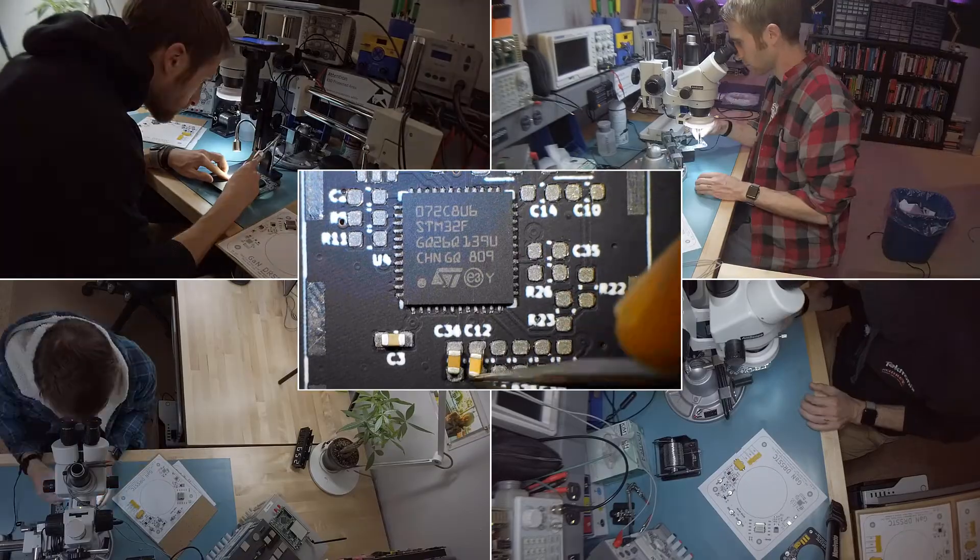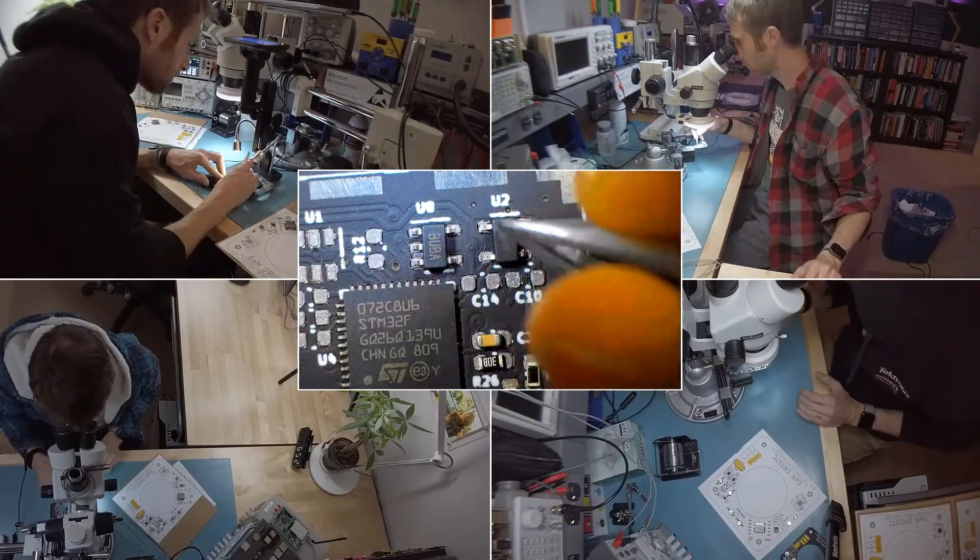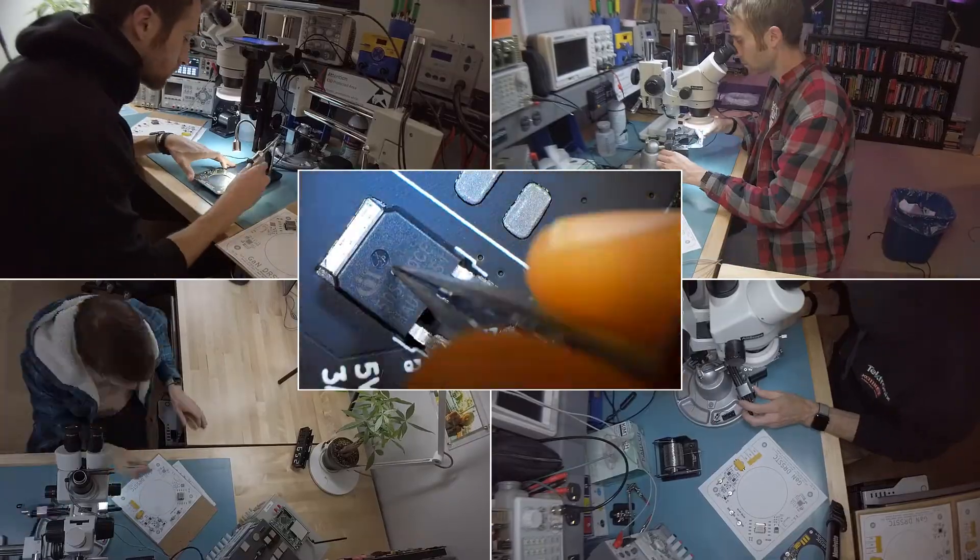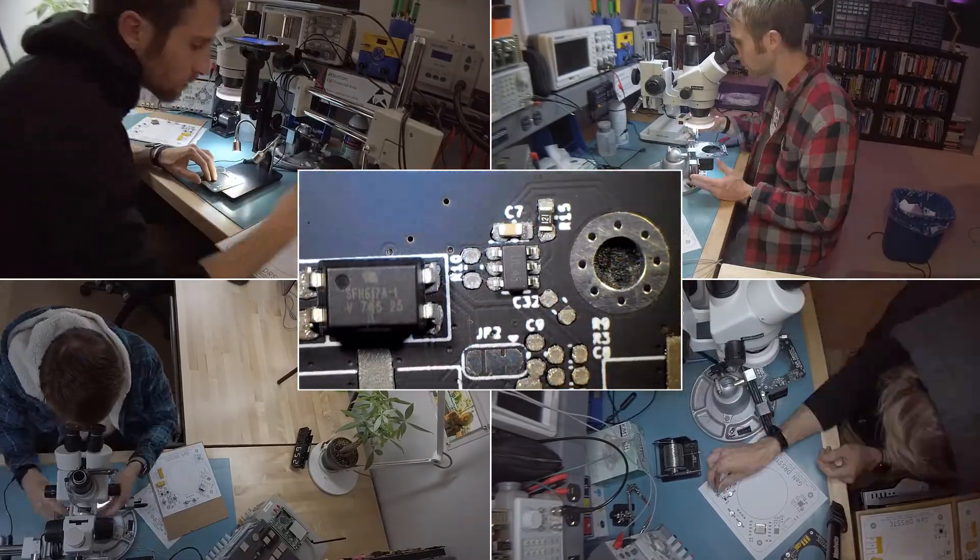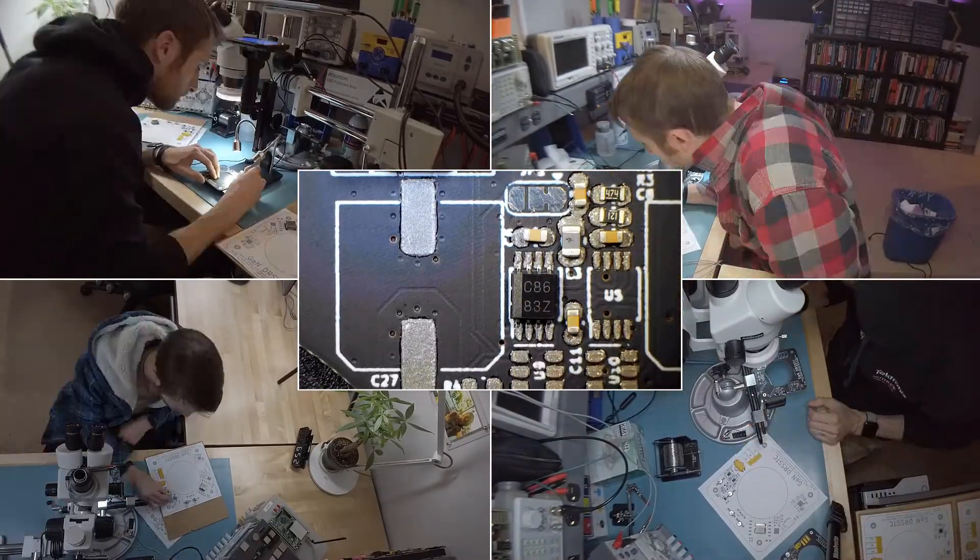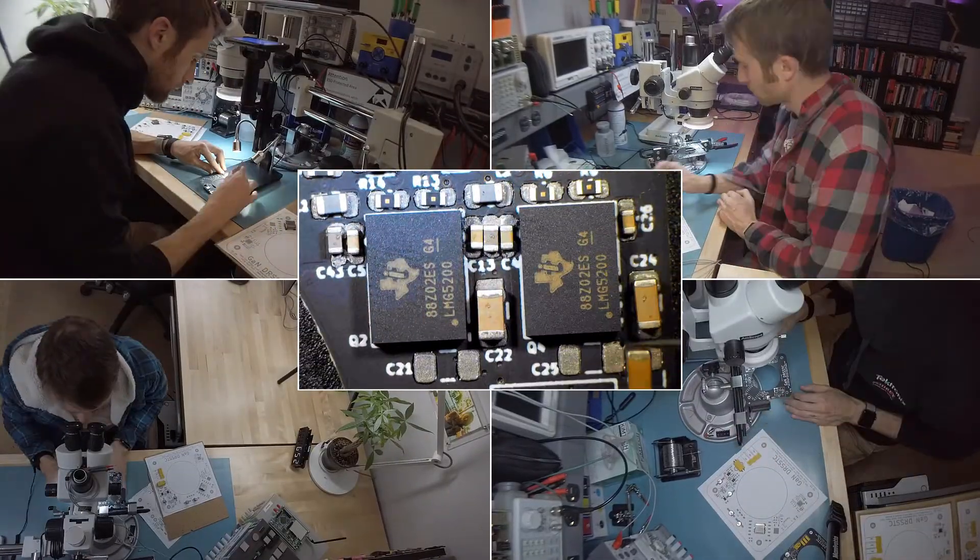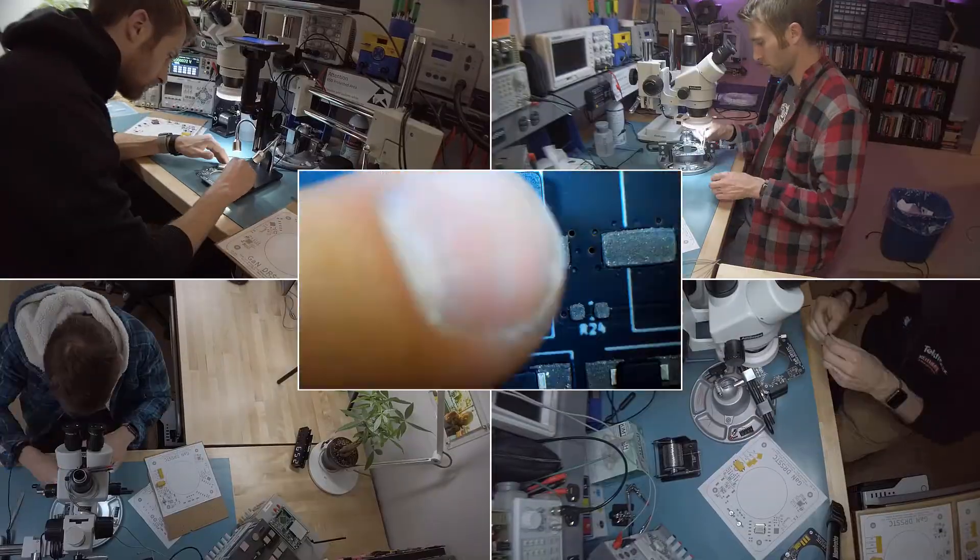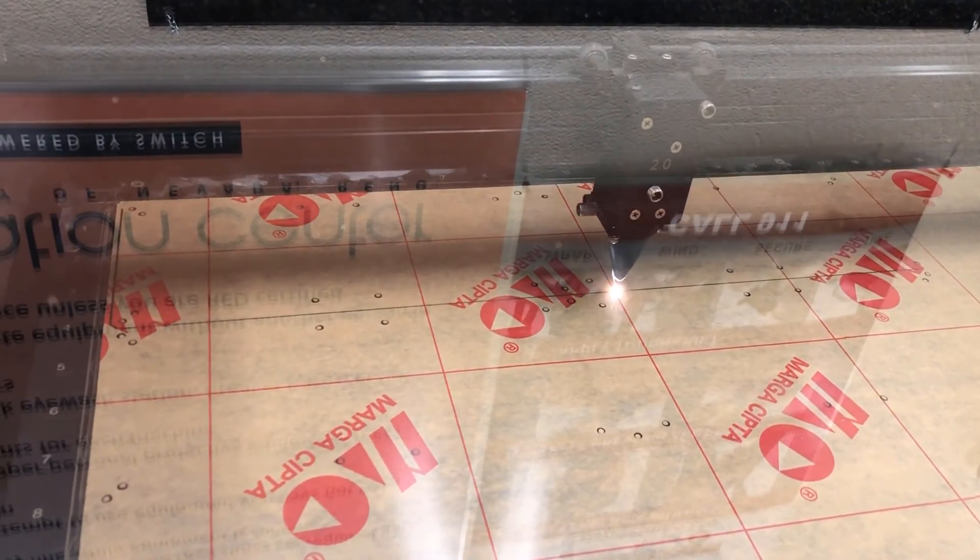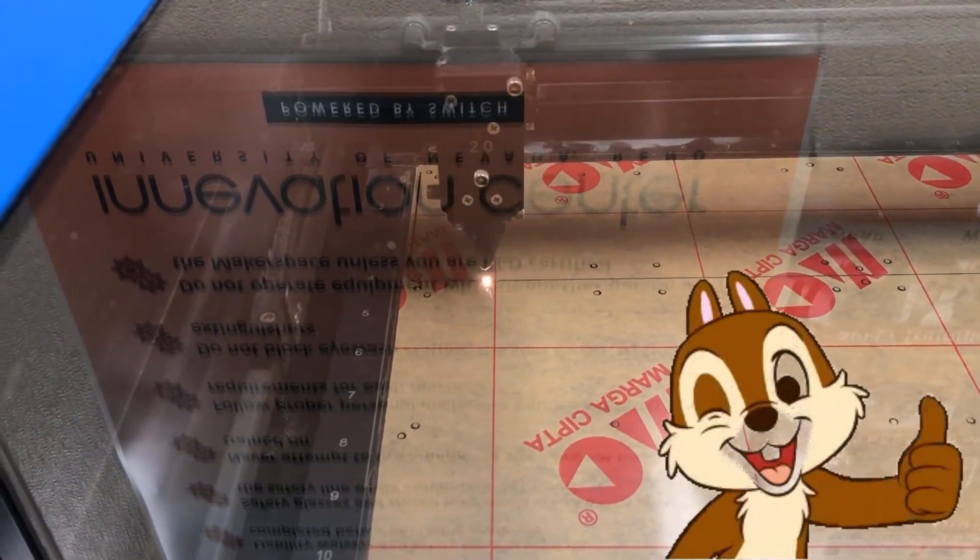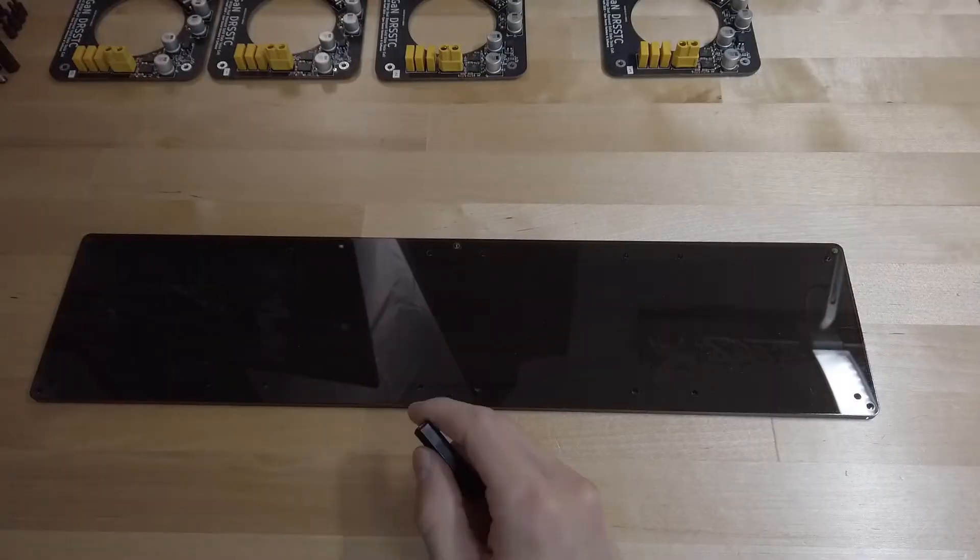Because this design is comprised mostly of surface mount components, I've used a stencil to apply solder paste and will be reflowing the boards in an oven. My friend Joe helped me laser cut two base plates which will be used as the mechanical structure. Thanks Joe.